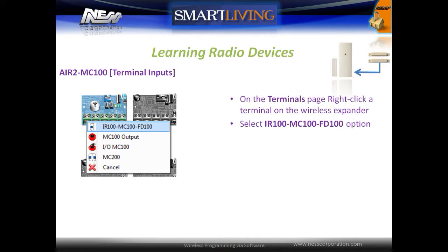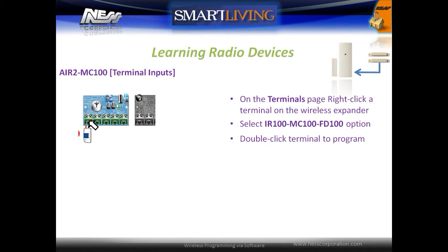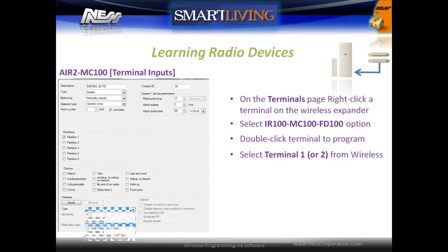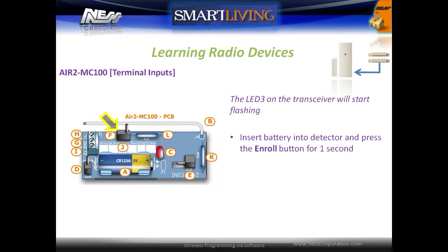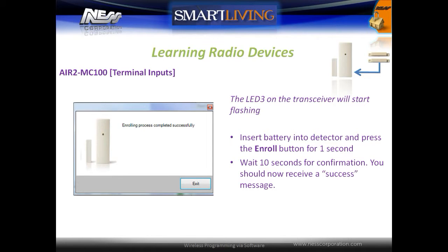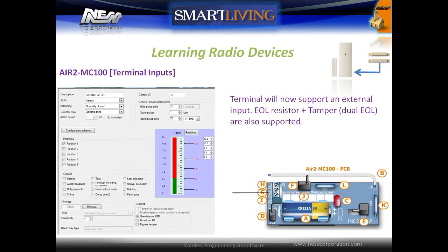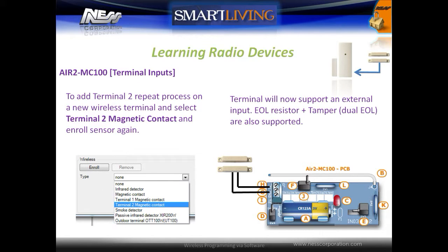To learn one of the reed switch's terminals as an input, on the terminals page right click on a terminal on the wireless expander, select the IR100 option, and double click to open the programming window. Under the wireless programming section, select the type as terminal 1 or 2. Click the enroll button, and once the system is in enroll mode the transceiver's LED 3 will start to flash — press the enroll button on the device. After about 10 seconds, a message should confirm that the device was enrolled successfully. The terminal will now support an external input and can also be configured for an end of line resistor plus tamper. To program the second input, repeat this process on a new wireless terminal and select the terminal 2 magnetic contact option and enroll the sensor again.